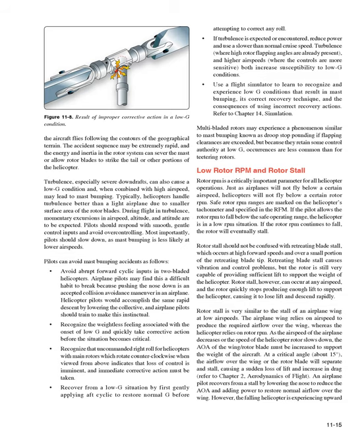Turbulence, especially severe downdrafts, can also cause a low G condition and, when combined with high airspeed, may lead to mast bumping. During flight in turbulence, momentary excursions in airspeed, altitude, and attitude are to be expected. Pilots should respond with smooth, gentle control inputs and avoid over-controlling. Most importantly, pilots should slow down, as mast bumping is less likely at lower airspeeds. Pilots can avoid mast bumping accidents by avoiding abrupt forward cyclic inputs in two-bladed helicopters. Airplane pilots may find this a difficult habit to break because pushing the nose down is an accepted collision avoidance maneuver in an airplane.